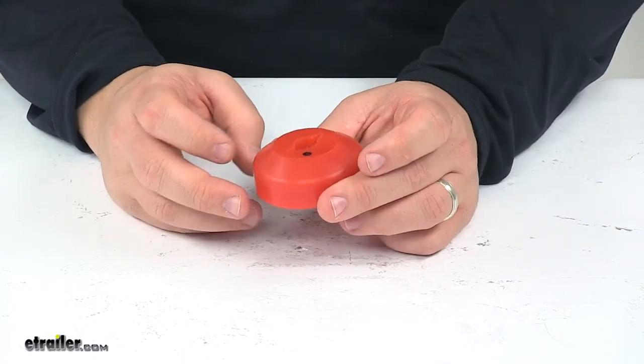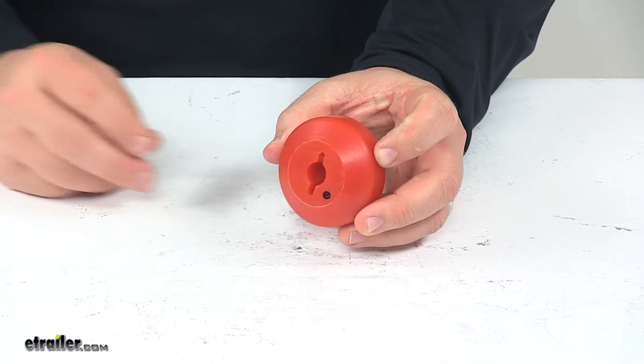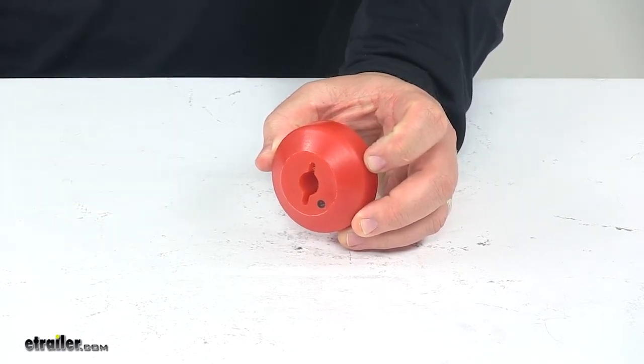Product's also covered with a limited lifetime warranty. That's going to do it for today's look at the Bulldog Winch Cable Hook Stopper for ATV and UTV winches.